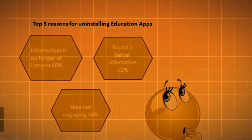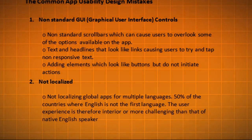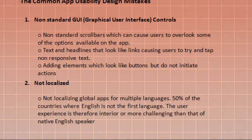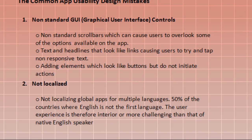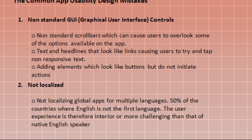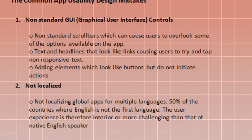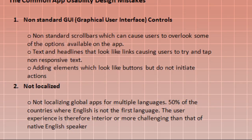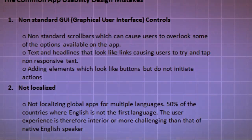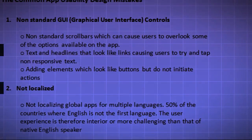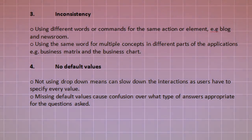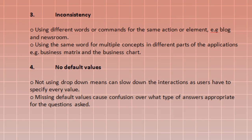The eight common app usability design mistakes. First, non-standard GUI (Graphical User Interface) controls — non-standard scroll bars can cause users to overlook some options available on the app. Text and headlines that look like links cause users to try and tap non-responsive text. Adding elements which look like buttons but do not initiate actions. Second, not localized — not localizing global apps for multiple languages means 50% of countries where English is not the first language have an inferior or more challenging user experience than native English speakers. Third, inconsistency — using different words or commands for the same action or element, for example 'blog' and 'newsroom'.